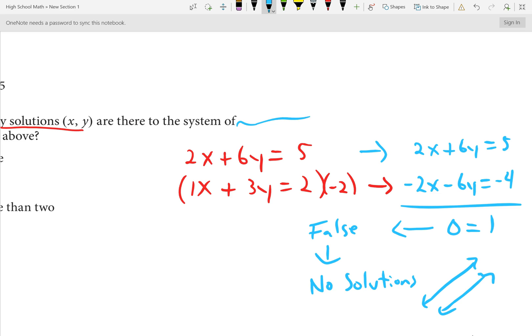If, however, the variables fall out and you get some true statement, then this would be infinitely many solutions. Graphically, it would be two lines right on top of one another. Number 16 is A.